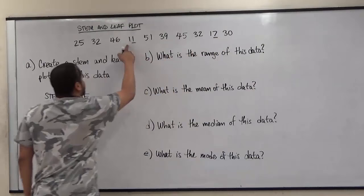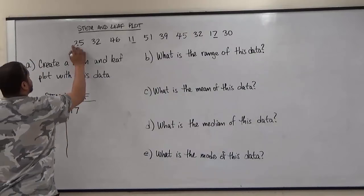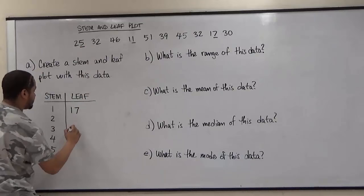For the leaves of two we have just twenty-five, so the leaf for twenty is going to be just the five. Then we have thirties.